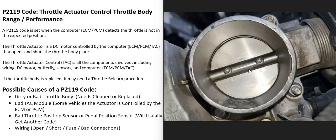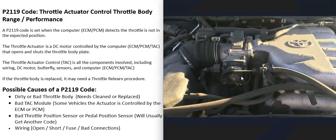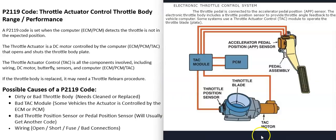When throttle bodies were first introduced, there was a cable that ran from the gas pedal up to the throttle body, and as the pedal was pressed it pulled on this cable and the throttle body opened up. But in most newer vehicles they replaced that cable with what is called an electronic throttle control system, where the computer controls how open that plate is.